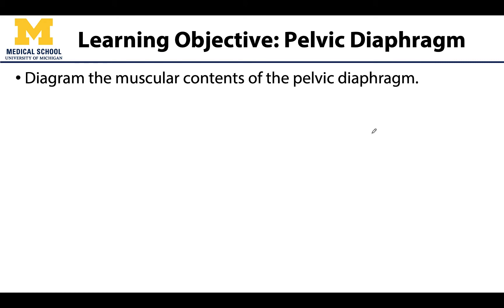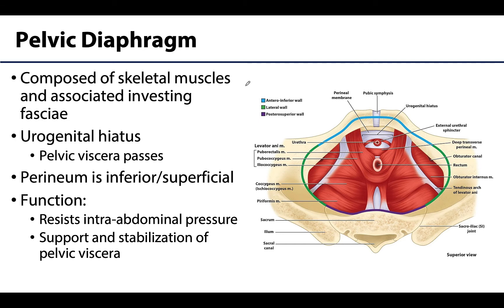Our main goal here will be to outline the muscles, or the muscular contents, of the pelvic diaphragm and their basic placement. The pelvic diaphragm is more than just the muscles — it also includes the investing fascia that surrounds them. The superior investing fascia, facing the internal pelvic viscera, is thicker than the inferior portion. That combination of the two fascial layers and the muscles forms what is considered the pelvic diaphragm.